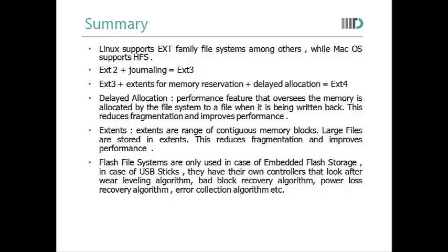EXT2 plus journaling equals EXT3. EXT3 plus extents for memory reservation plus delayed allocation equals EXT4. Delayed allocation is a performance feature that ensures memory is allocated by the file system to a file when it is being written back. Extents are ranges of contiguous memory blocks; large files are stored in extents.